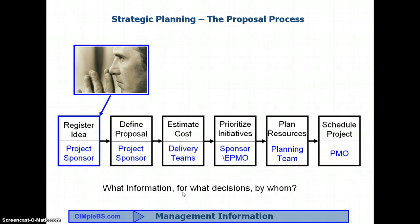The key to effective process definition is to define the process from the top down based on the information needs of the process decision makers, and then the process steps to deliver the information, and then the data requirements from the bottom up based on the system design and functionality to support both. So we'll start with the discussion of the first step — ideation, proposal registration — or whatever the organization would call the transfer of the idea from the back of the napkin to a system designed to facilitate the strategic planning process. We'll explore all six steps using the same approach.